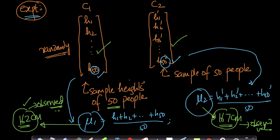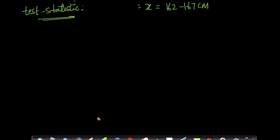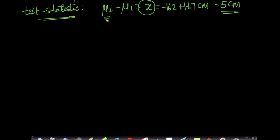Now let's design a test statistic. In the previous coin toss example our test statistic was number of heads. Here, the test statistic is mu2 minus mu1, which is 167 minus 162 = 5 centimeters. So our test statistic X is the difference in sample mean heights between City 2 and City 1, which equals 5 centimeters.